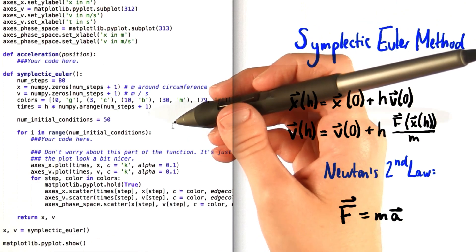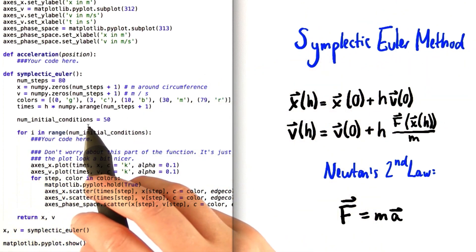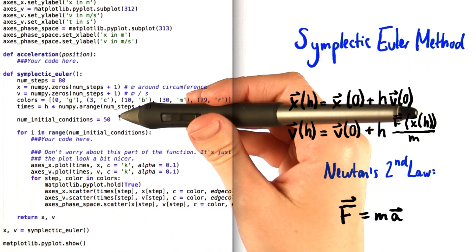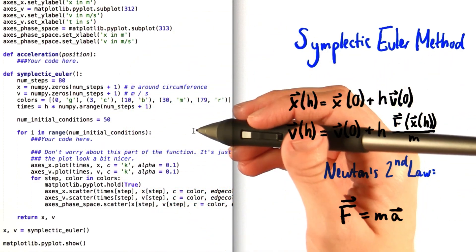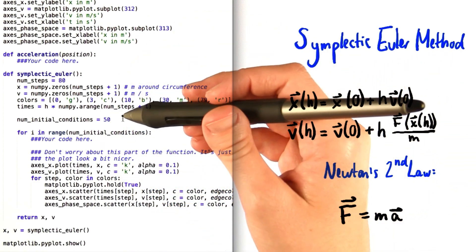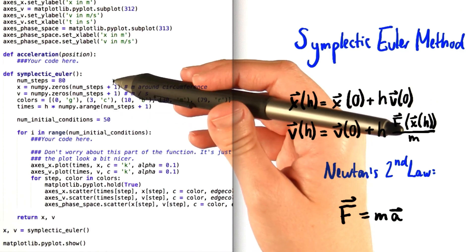I'm going to give you a few hints, though. You can see that we've created this constant called num initial conditions and set it equal to 50. What you're really doing overall in this problem is looking at 50 different pendulums, which each have different initial values for x and v.